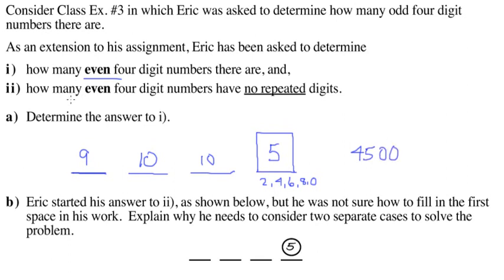Now it gets tricky. How many even four-digit numbers are there with no repeated digits? Here's how you start. You could put two, or four, or six, or eight, or zero in this spot. So there are five choices there.